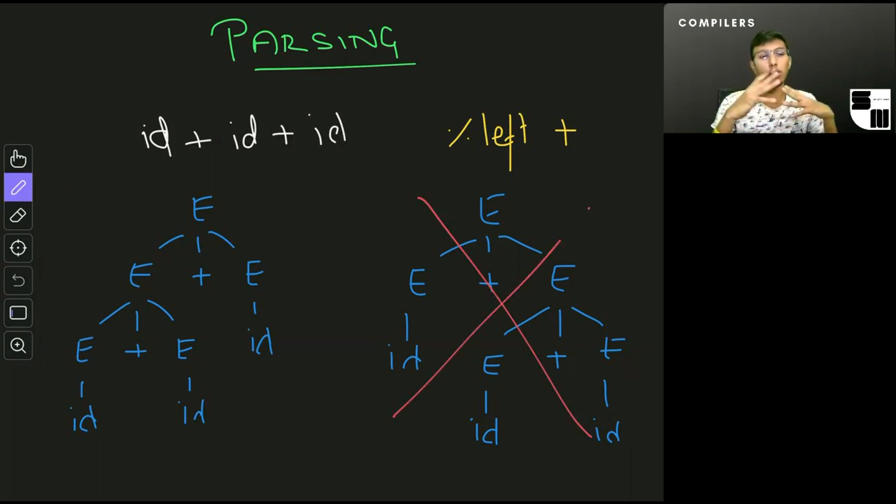That is one of the things that we can do, and that's used more popularly rather than disambiguating grammars directly. Similarly, there are also ways to specify that multiplication has precedence over addition, which would also take care of the example that we saw in the previous page.